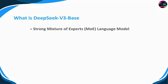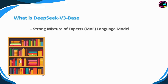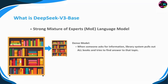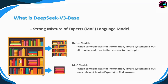DeepSeek V3 base is a powerful mixture of experts language model. What exactly is a mixture of experts language model? Think of the model as a massive library with millions of books. When a question comes in, dense models like ChatGPT essentially open every book in the library to find the answer. In contrast, a mixture of experts model relies on a small specialized set of expert books, specifically trained and organized to quickly and efficiently locate the right answer. This approach makes the model both more efficient and accurate.